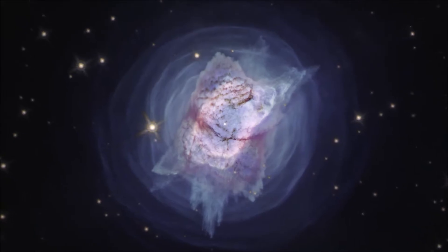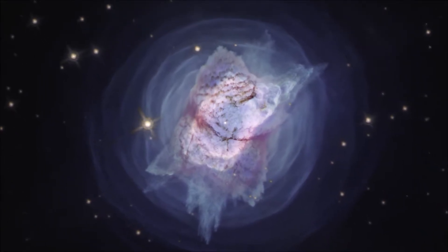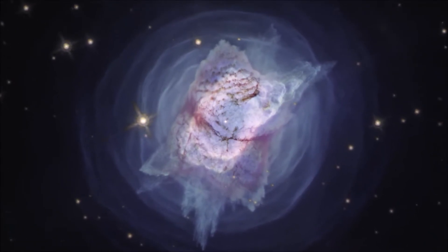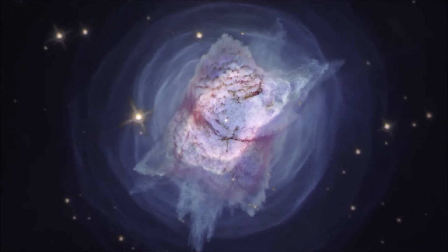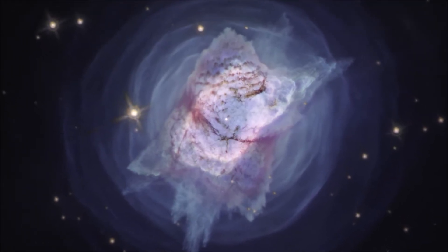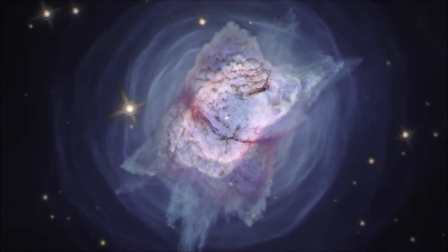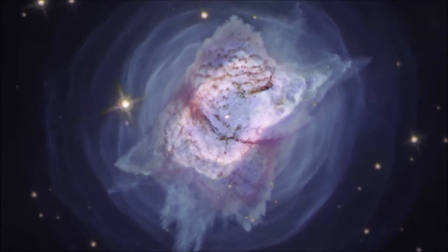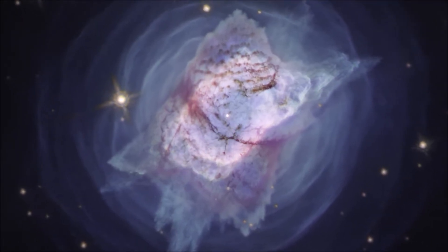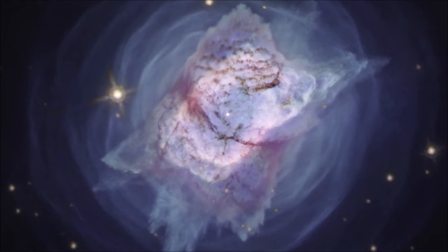Second, there are planetary nebulae. This kind of nebulae doesn't really have anything to do with planets. But when early astronomers saw them through their telescopes, they looked so round and bright that they thought they must be planets.